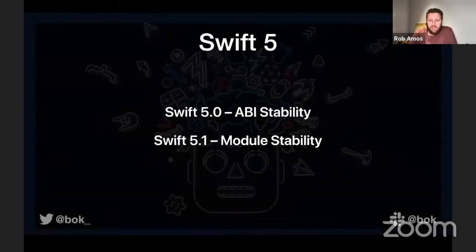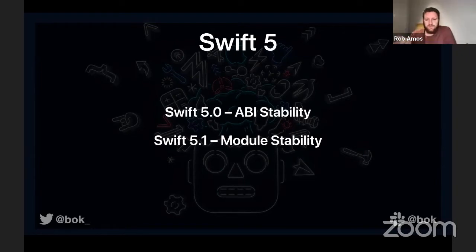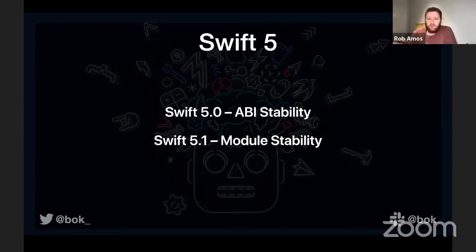Then Swift 5 came along. Prior to Swift 5, all of your apps would ship with a copy of the Swift language runtime and core libraries embedded inside your app binary — mostly to preserve compatibility between versions so that regardless of what version you built with, it would run on that OS. As of Swift 5.0 we got ABI stability, which means you don't necessarily have to ship your app with the Swift runtimes built in anymore. From Swift 5.1 we can also adopt that behavior for our own frameworks.